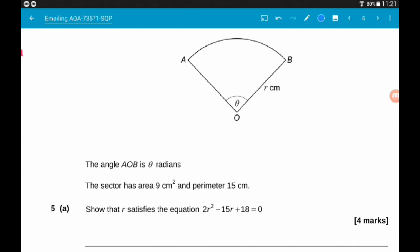Part A wants us to show that R satisfies the equation 2R² - 15R + 18 = 0. So we are given two bits of information here, the area and the perimeter.